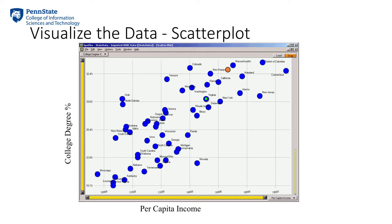However, it is also obvious from this graph that not every state follows that pattern. For example, Nevada seems to be out of the group. Why is that the case? Should we consider that as an outlier? We can probably suggest this is a candidate for an outlier; however, we don't know yet. We can actually use more statistical methods to confirm if an outlier exists.